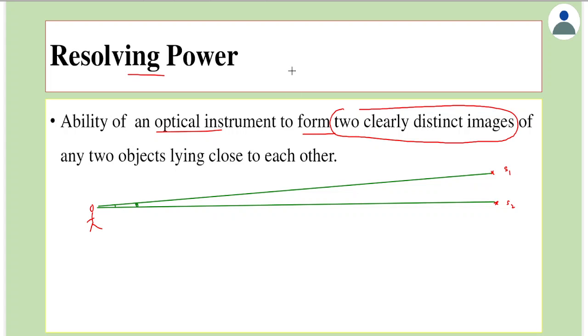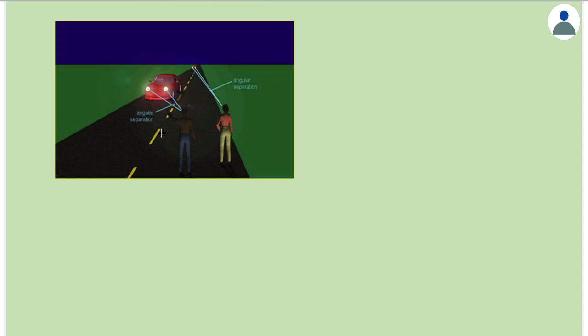Now if the angle is less than one minute, then these two would appear as a single object. As seen here, we can look at an example where if the cars are close by, then the angle subtended would be greater. In this case, if a person is looking at a car very far away, then the angle made would be less.